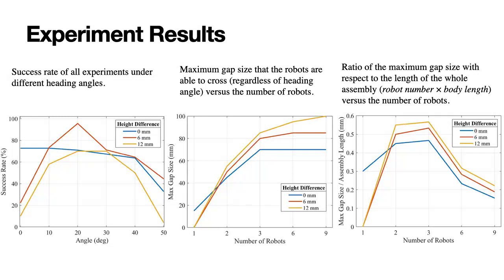This is because when the gap size increases, the major problem preventing the robot from going through is actually the height difference. This does not help by increasing the number of robots because the height drop of the assembly does not change just by adding more robots.